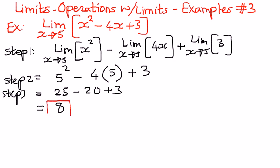Therefore, when we find the value of the limit of this function, x² - 4x + 3 as x approaches 5, the value of that limit is going to be equal to positive 8.